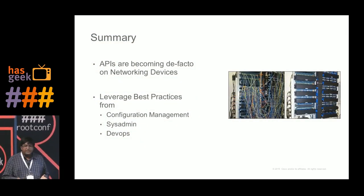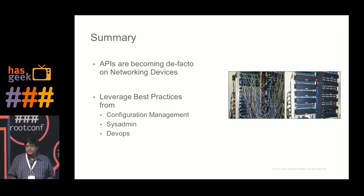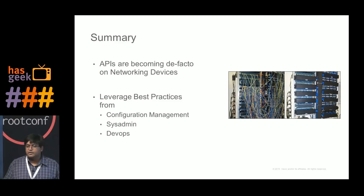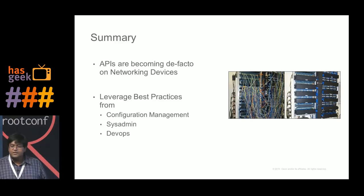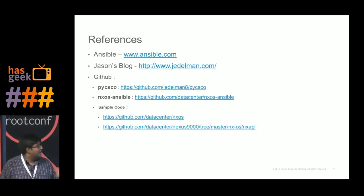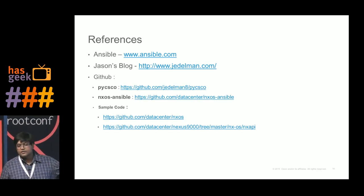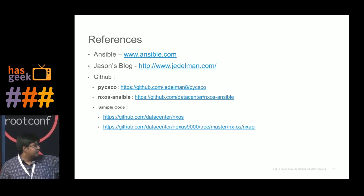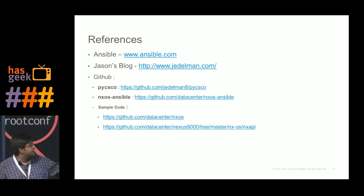In summary, REST-like APIs are becoming de facto on networking devices. There is a need for more transparent and open standard-based APIs, driven through virtualization and interaction with the web space. We should leverage best practices from configuration management and the sysadmin world — which has been leaps and bounds ahead — and from the DevOps model to manage all our infrastructure. References include the JNS blog for getting started with Ansible and NX-OS, code samples at the data center NX-OS repository, and modules like PyCSEO and NXOS.